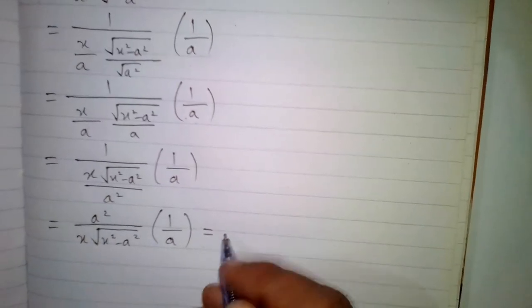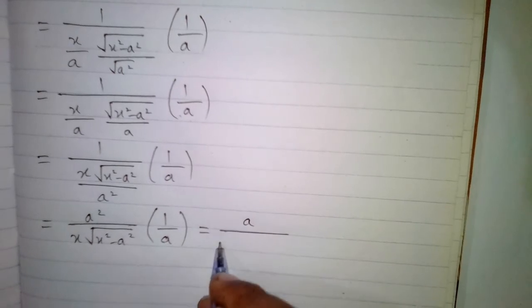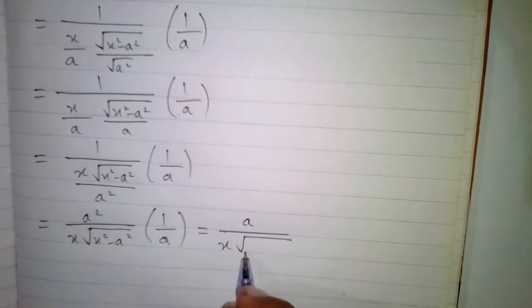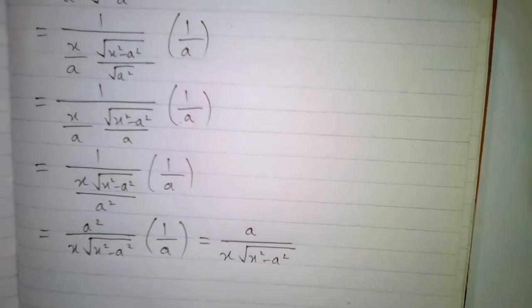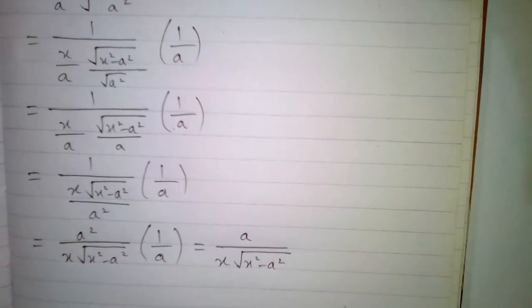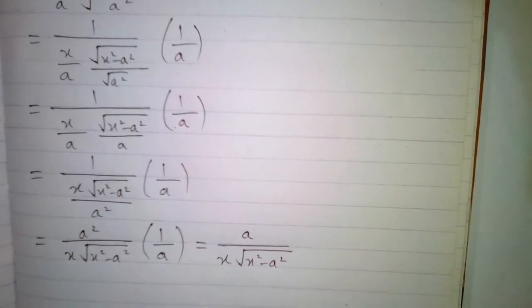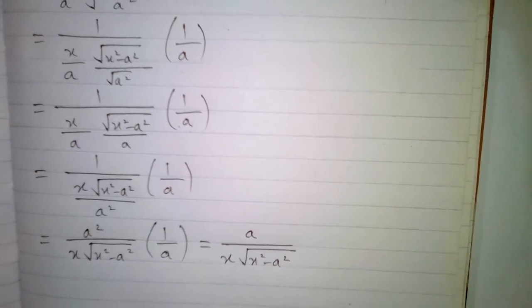And this can be written as a squared upon x times square root of x squared minus a squared, multiplied by 1 upon a. So the derivative of sec inverse x upon a is a upon x square root of x squared minus a squared.